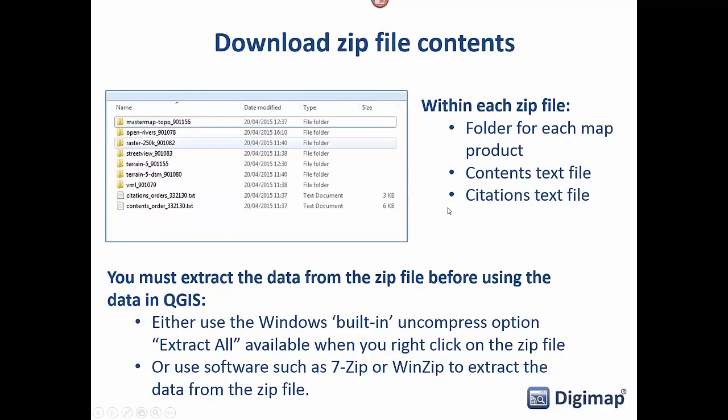Once you've ordered the data, you get a zip file with a folder for each of the different products you've ordered. There's also a contents file listing all the data products and tiles, and a citations text file giving you a line you can put into a paper or essay to properly cite your use of the data. You need to extract the data from the zip file before using it in QGIS — you can use Windows' built-in extract option or software like 7-Zip or WinZip. Note that MasterMap comes as a zip file containing a gzip file — most converters prefer to read the gzip in its compressed form.